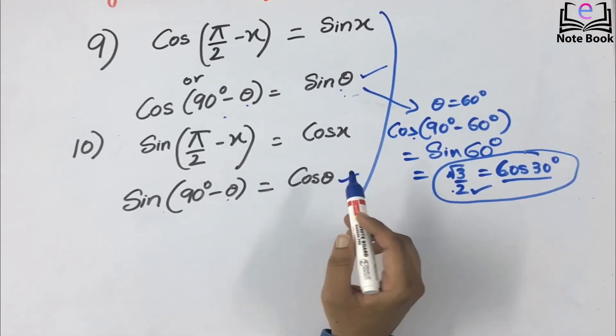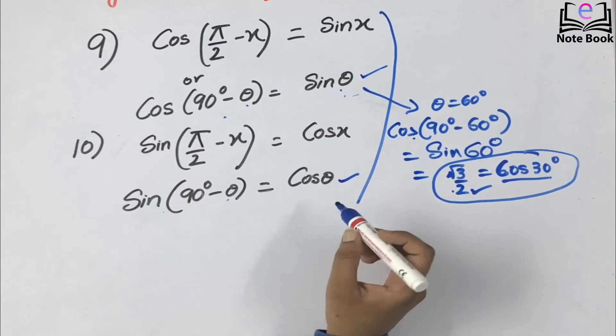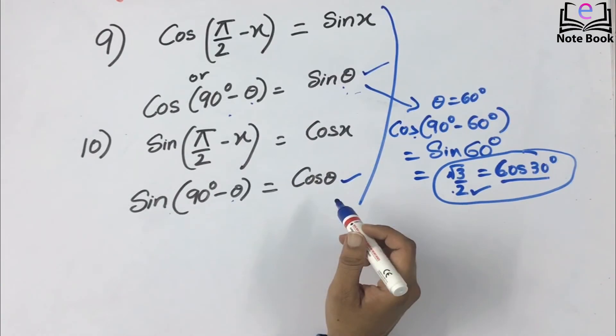Next we will learn about sin(a + b) and sin(a − b) — that is, sum and difference of two angles for the trigonometric function sine.